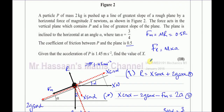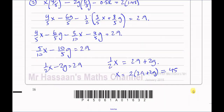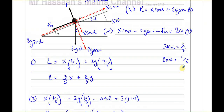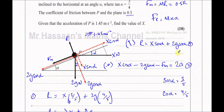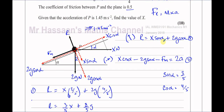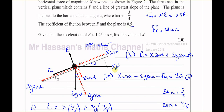So X equals 45 — there's the answer to this question. This was a 10-mark question and most of the marks are given by just resolving the forces parallel and perpendicular to the direction of motion. It's really important that you know how to resolve the weight and other forces both parallel and perpendicular to the plane. Once you can do that, that will earn you the majority of the marks.